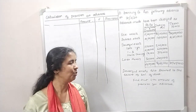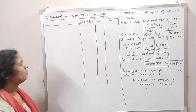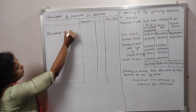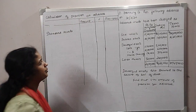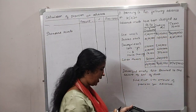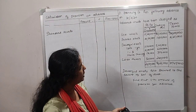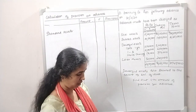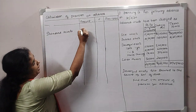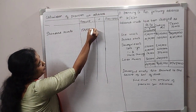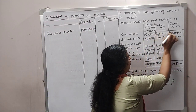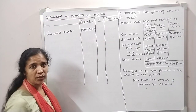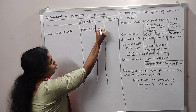You will find the amount of provision for advances. Let's start. That is the standard asset we will find. How do we find standard assets? The standard asset total is 15 lakh plus 65 lakh plus 70 lakh. We will find the standard asset total: 150 lakh.